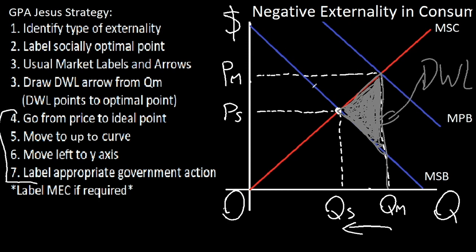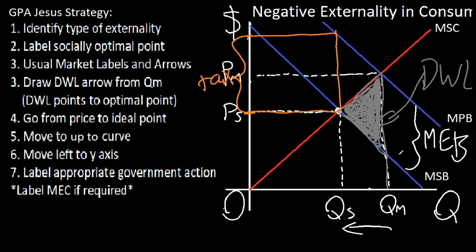So the next set of instructions are for drawing the tax we need to impose on this firm, which we can go from the socially optimal price right here all the way to the socially optimal point, then go all the way up to our marginal private benefit curve, and heading left to the y-axis. And then label this with the appropriate government action, which since this is a negative externality, we're going to tax it to decrease the consumption of the good. And if your teacher also requires it, we can label the marginal external benefit, which is just in between the societal and private curves, which we'll call MEB. And then voila, we're done.